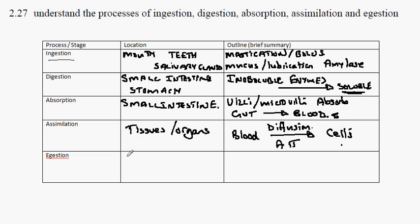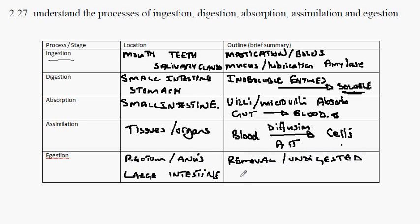Egestion is a process which occurs in the rectum, anus, of the large intestine. What happens here is that we have the removal of undigested material from the alimentary canal. And this is known as egestion, passing of solid wastes.